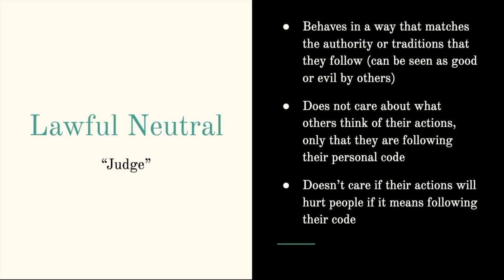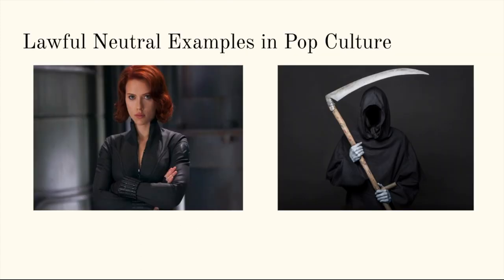Next, we have lawful neutral. Lawful neutral characters behave in a way that matches the authority or traditions that they follow — this could be a religion or a very specific traditional society. These traditions can be seen as good or evil by others, and that's why they're neutral. They don't care about what others think of their actions, only that they are following their personal code, even if it ends up hurting people. Lawful neutral examples are Natasha Romanoff and the Grim Reaper from mythology.